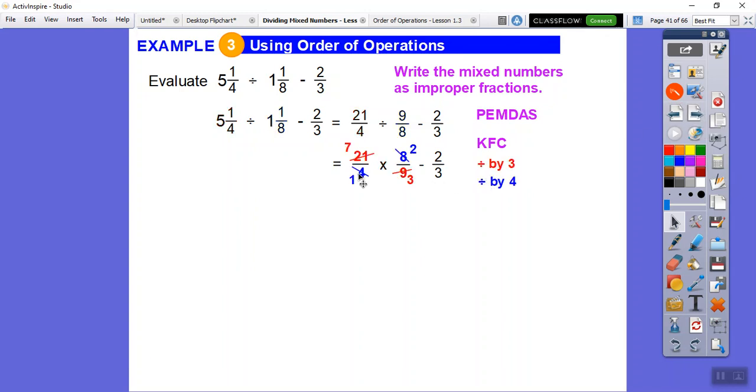And then let's cross cancel here. I'm going to divide by 4. 4 goes into 4 once, 4 goes into this 8 two times. And then 3 goes into 9 three times, 3 goes into 21 seven times. So as long as we can reduce it, now we can just go ahead and multiply these two fractions. Remember, we've still got to take off two thirds at the end. So 7 times 2 over 1 times 3. That's going to get us 14 over 3.